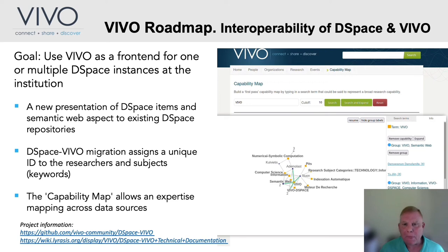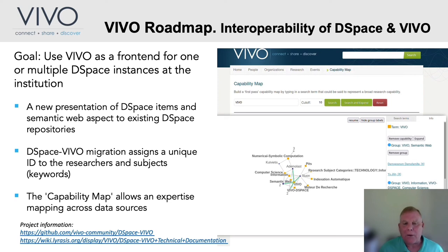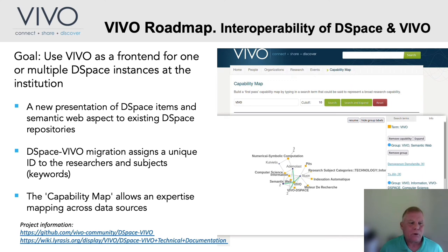Another project is the interoperability of DSpace and VIVO. DSpace is probably the most common open source repository in the world, and VIVO can act as a front end for DSpace instances at a particular institution, allowing DSpace to curate documents, datasets, and other things generated during research activities, and then representing them within the VIVO system through automatic harvesting of metadata. This is our first step toward building an interoperable set of open source tools to support the research life cycle.